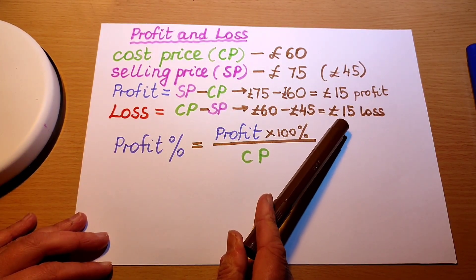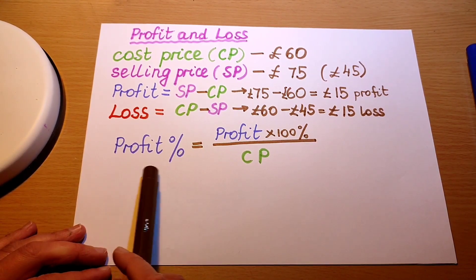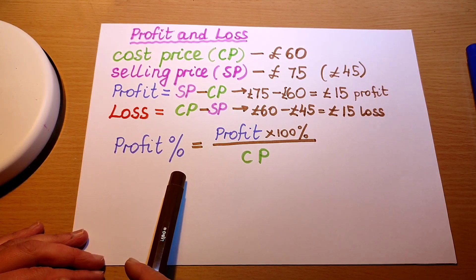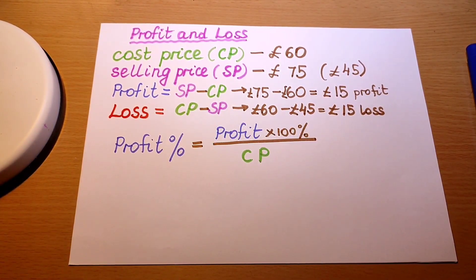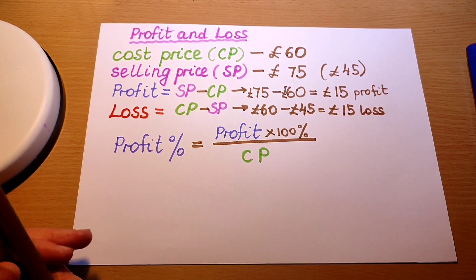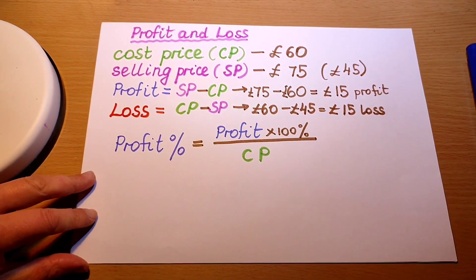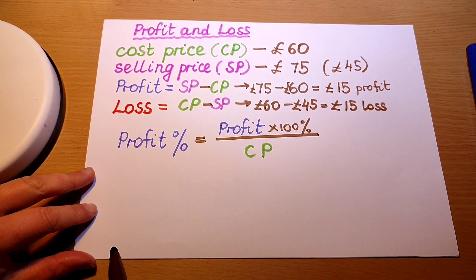There's also such a thing as profit and loss percentage. This is the formula for profit percentage, however you don't need to remember formulas by heart. If you know the cross multiplication and division method you can work out anything, so let me show you an example.